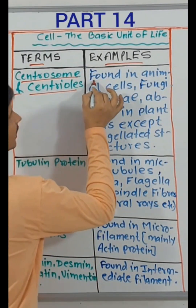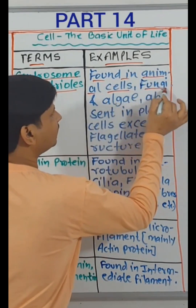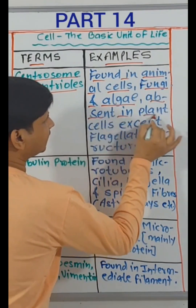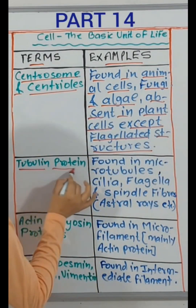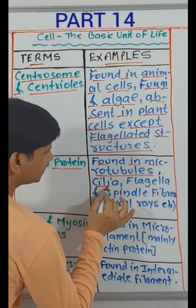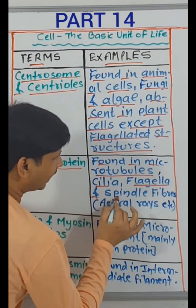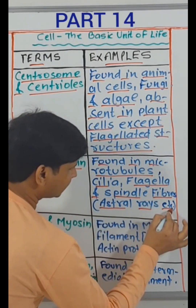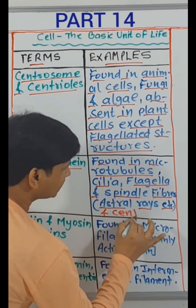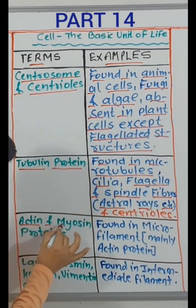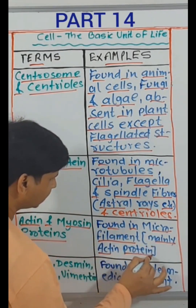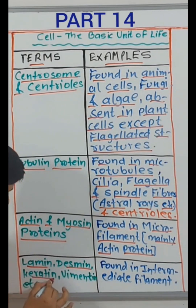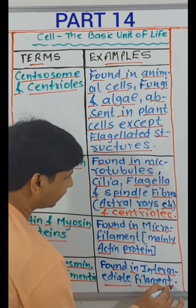Centrosome and centrioles — found in animal cells, fungi and algae; absent in plant cells except flagellated structures. Tubulin protein — found in microtubules, cilia, flagella and spindle fibers, S12 rays, etc., and centrioles. Actin and myosin proteins — found in microfilaments, mainly actin protein. Lamin, desmin, keratin, vimentin, etc. — found in intermediate filaments.